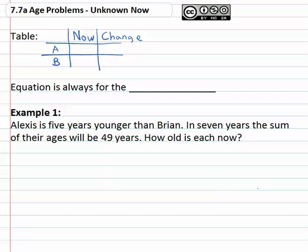Often we'll be asked to find their age now based on a future situation which means the equation is always for the change column.